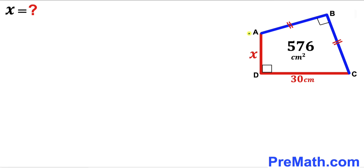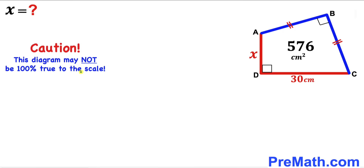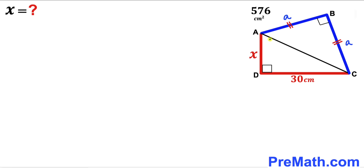In other words, we are going to find the value of side length AD. Let's get started. Let's focus on side lengths AB and BC — if I label AB as lowercase a, then BC is lowercase a as well. Since both angles are 90 degrees, I'm going to connect vertices A and C, and as a result we end up with two right triangles: right triangle ACD as A sub 1 and right triangle ABC as A sub 2.